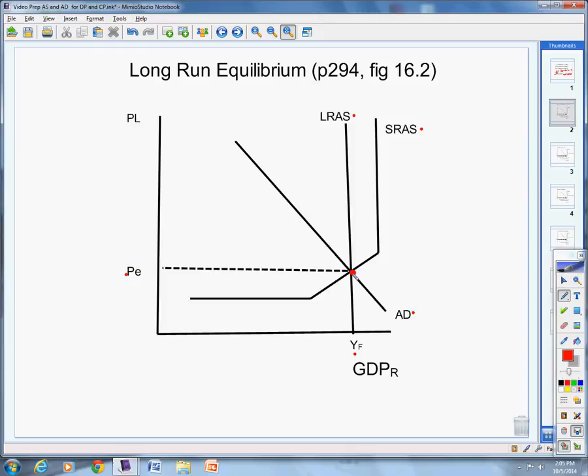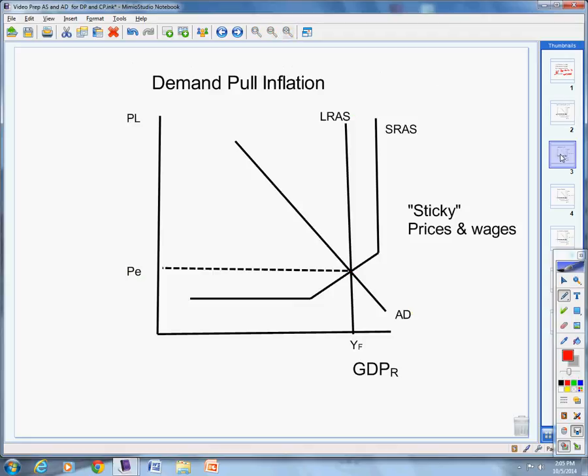GDP real is at full employment. Price level right here. This is the standard. This is where we start from graph. We don't always have to be there, but that's kind of the goal. That's nirvana. So let's look at situations other than nirvana.